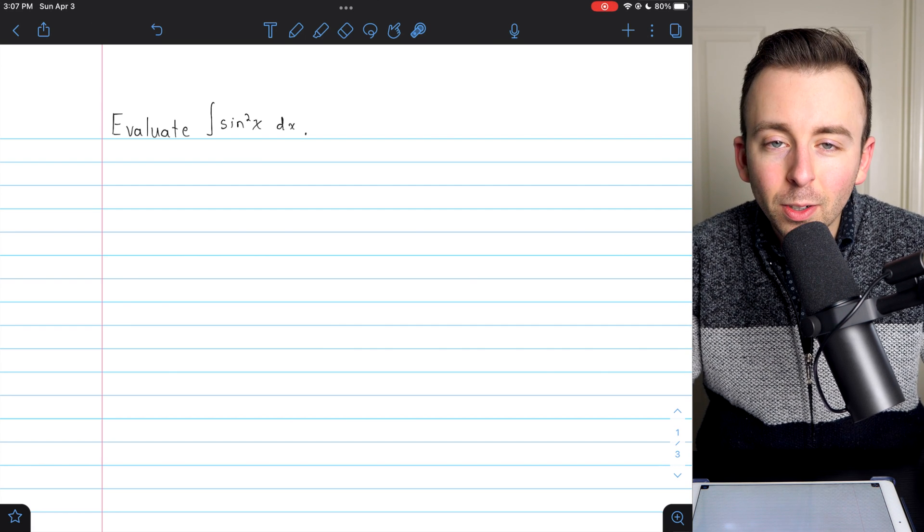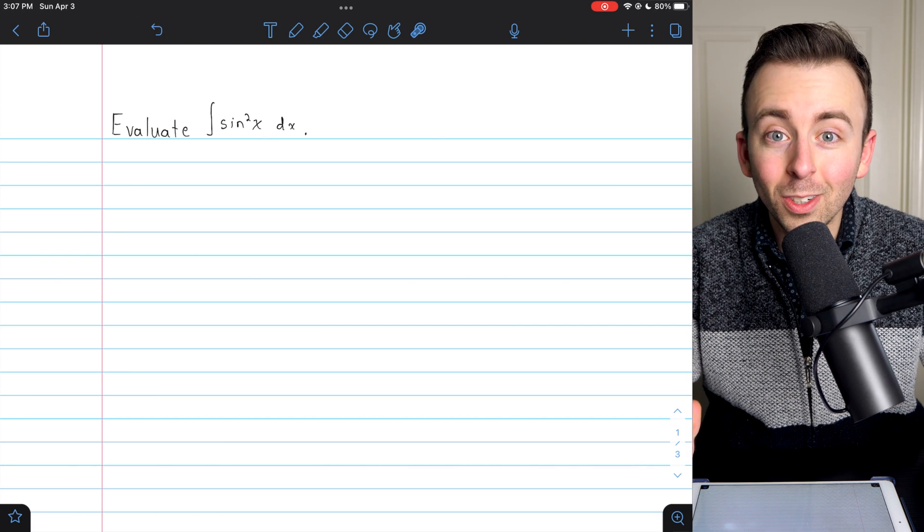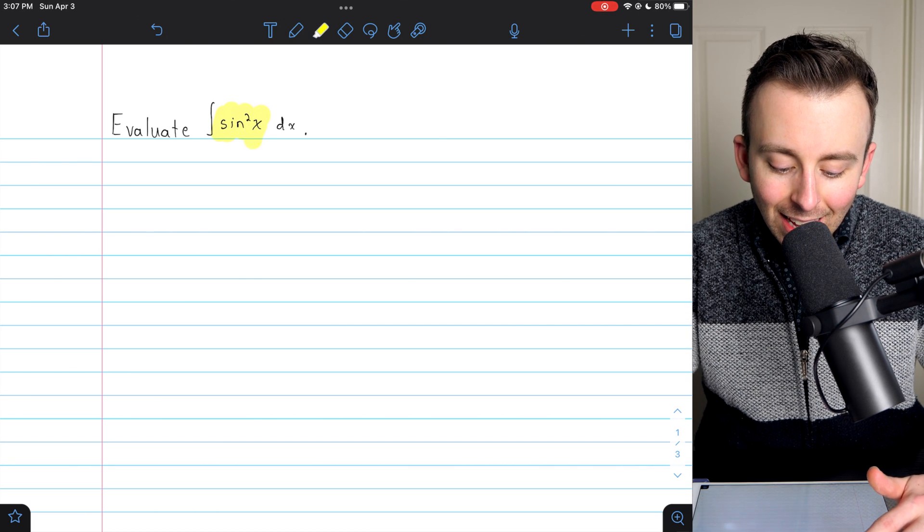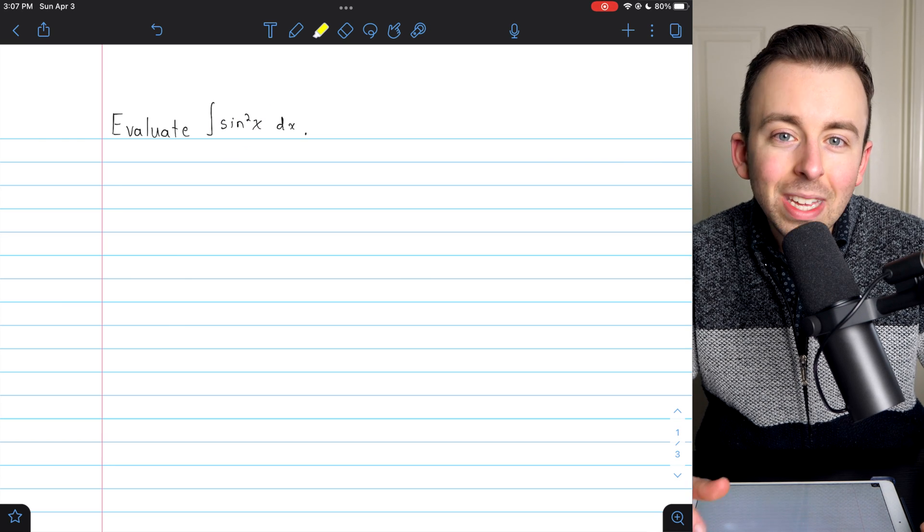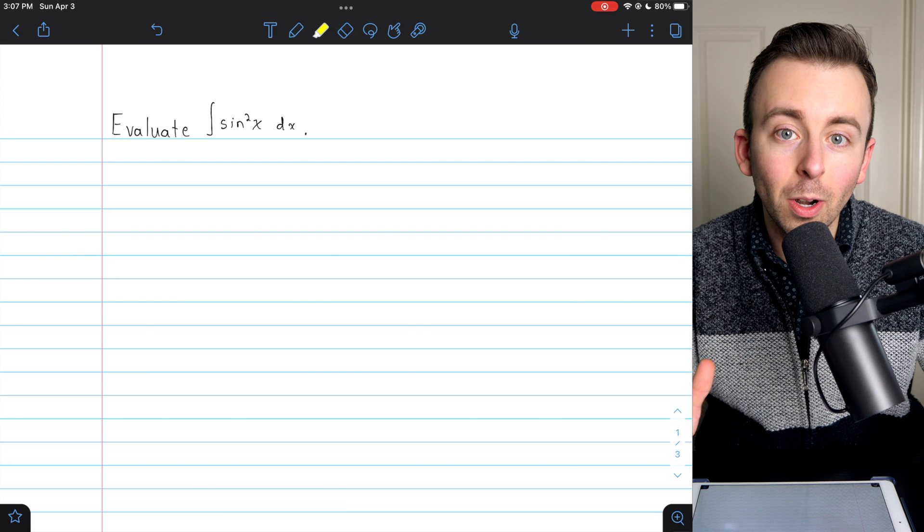What makes this kind of difficult is the trig identities you need to know in order to do it. Sine squared all alone doesn't look so good, but we can turn it into something that's not so bad if we remember our identities.